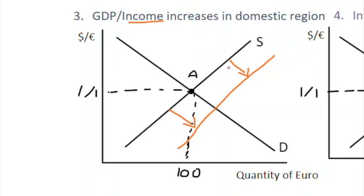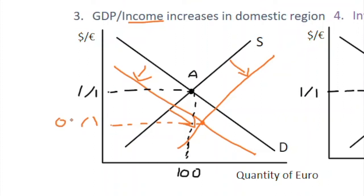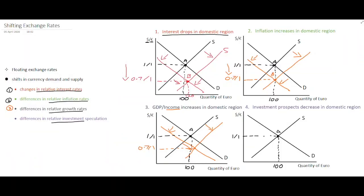The demand for euros will also decrease because you don't need euros to purchase those imports. So demand decreases for euros while supply increases, and this case results in a depreciation of the currency — one euro gives us 70 cents in terms of dollars. This is caused by the increase in supply of euros as people exchange them for dollars, while the demand curve shifts to the left because people aren't buying as many European-made goods.